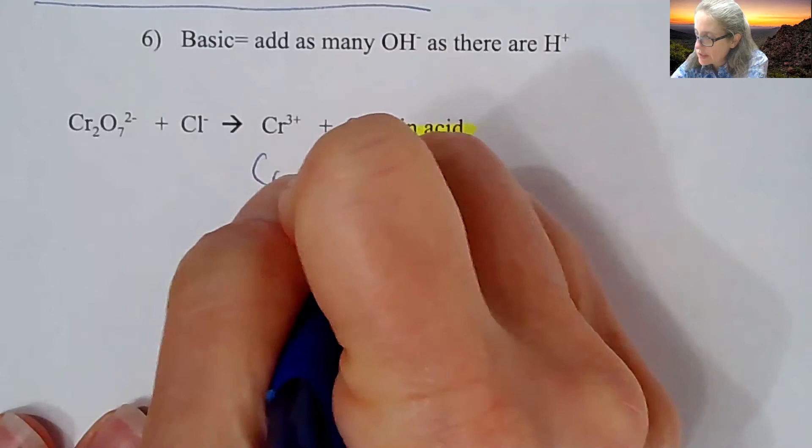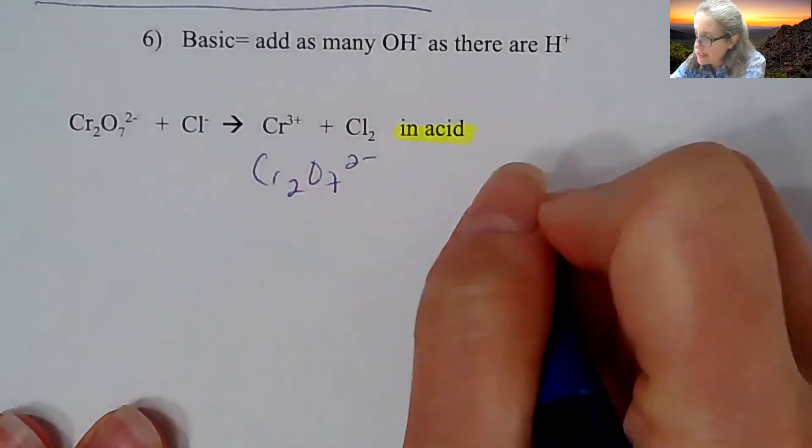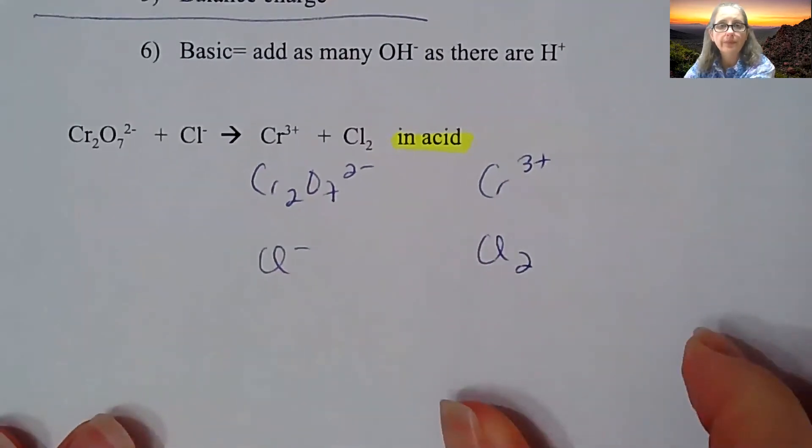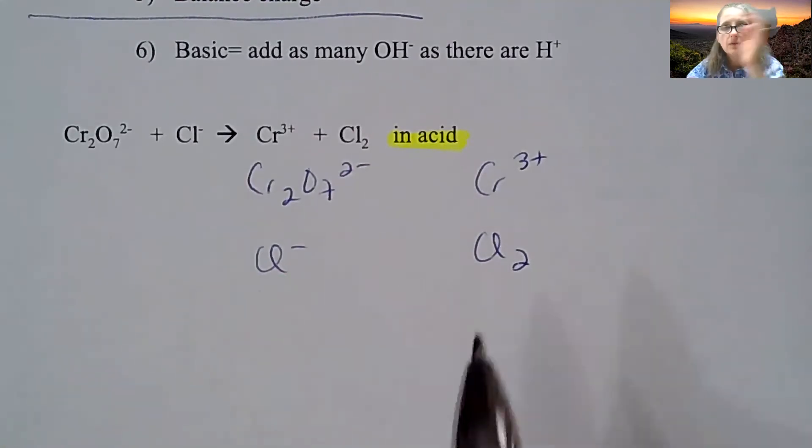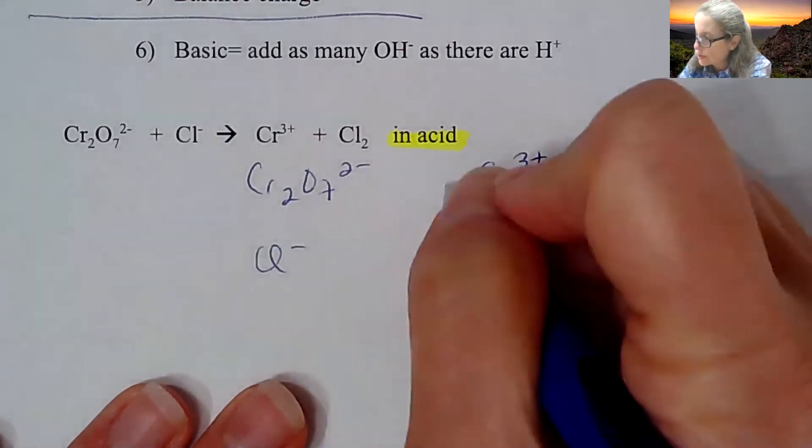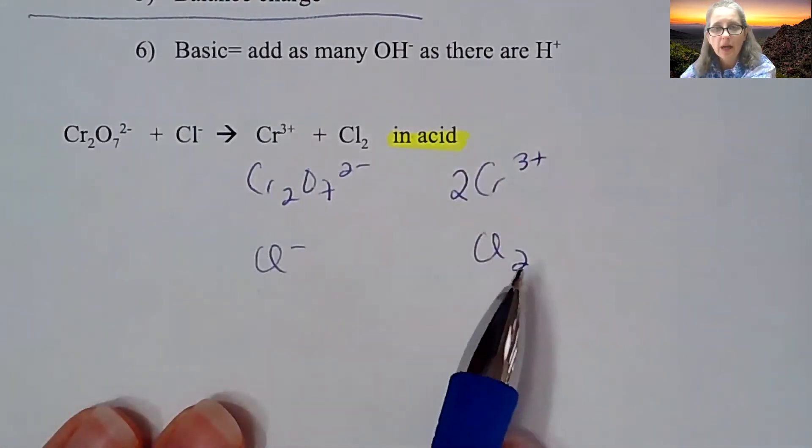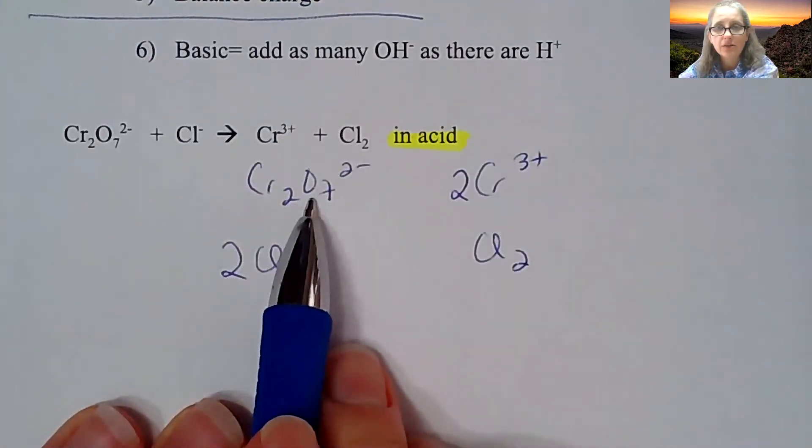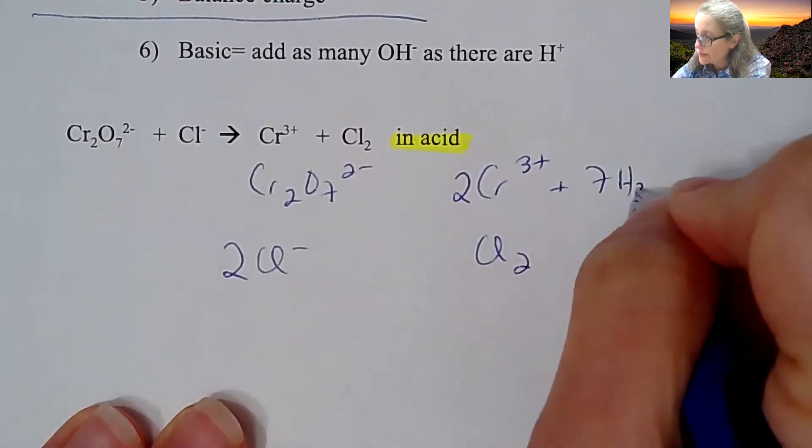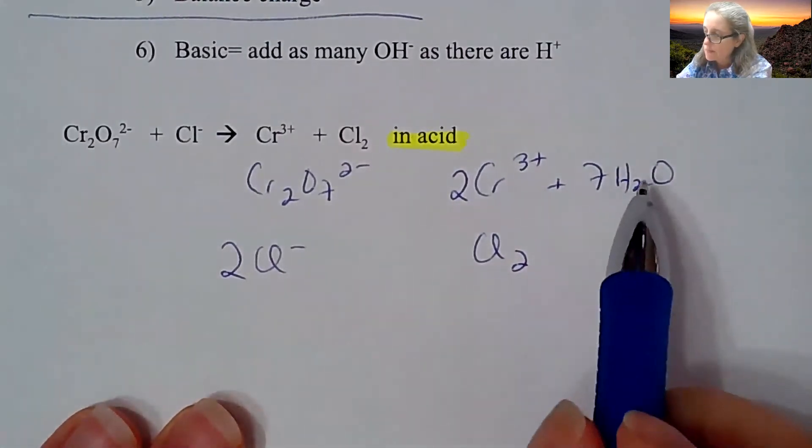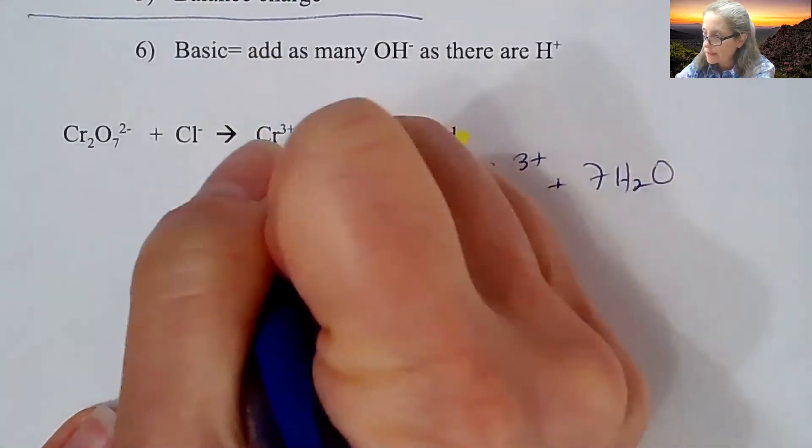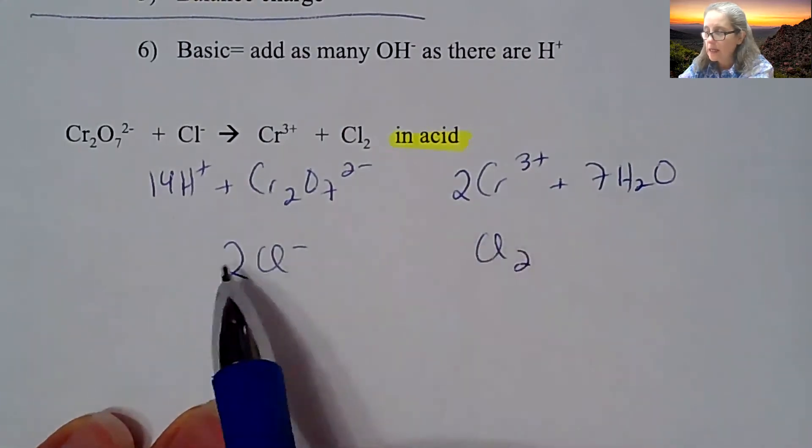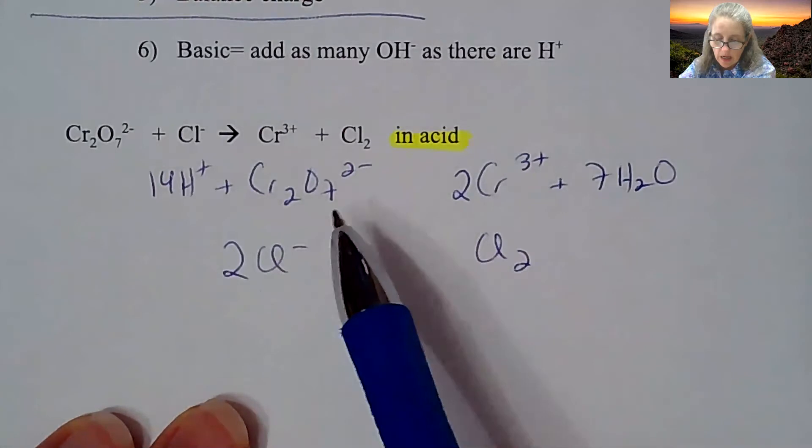I have dichromate, Cr2O7^2-, becoming Cr^3+, and Cl^- is becoming Cl2. It doesn't matter the order you do things, but realize I need two chromium, so I need to put a two in front of the chromium here. I have two chlorines here, so I need to put a two there before I get started. I have seven oxygens here, so I need to add seven waters over to this side. Since I added essentially 14 H+, I've got to put 14 H+ over here. The Cl's are fine.